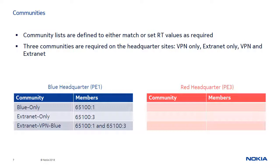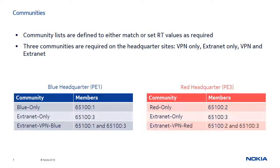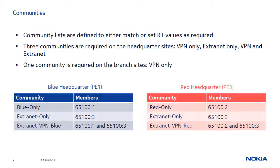Similarly, on PE3, Red Only identifies red VPN routes, Extranet Only identifies extranet routes, and Extranet VPN Red identifies routes as both Red VPN and Extranet routes. On the branch sites PE2 and PE4, only one community is required to identify routes as VPN-only routes.